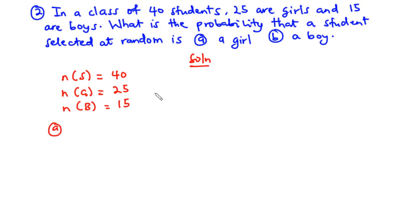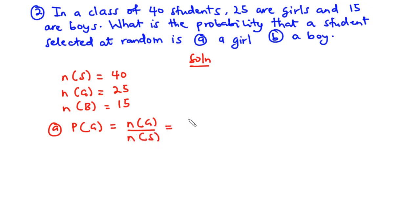Now A, we are asked to find the probability that a student selected at random is a girl. So the probability is equal to the number of girls in the class divided by the total number of students in the class. So we have 25 divided by 40. 5 goes into 25 five times and into 40 eight times. So the probability that a student selected at random is a girl is 5 over 8.